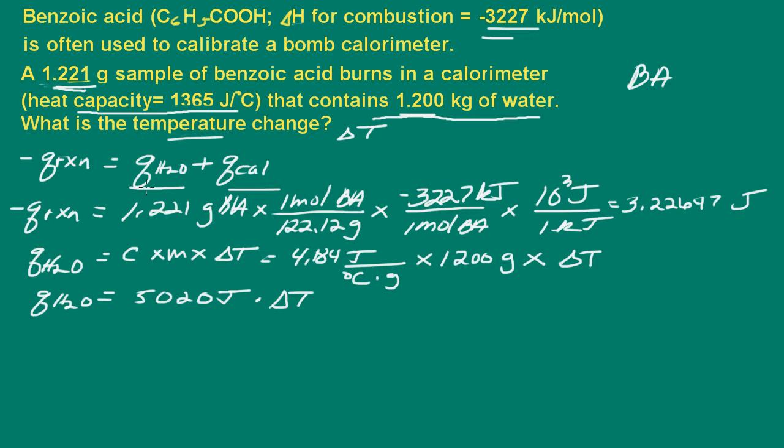Now let's determine the heat absorbed by the calorimeter. The heat absorbed by the calorimeter is equal to the heat capacity of the calorimeter times the temperature change, or delta T. We have the heat capacity times delta T, and we have 1,365 joules times delta T. So we're all set here.